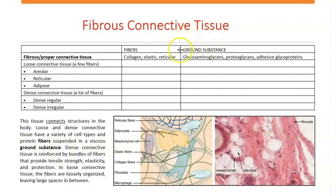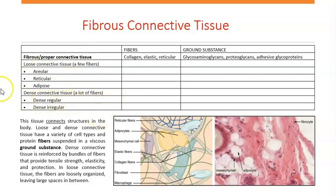What is the ground substance composed of? Glycosaminoglycans, proteoglycans, and adhesive glycoproteins. Now, based on the number of fibers — remember we said that connective tissue has fibers — you're going to have two main types. If you have just a few fibers in that tissue, that's going to be called loose connective tissue. If you have a lot of fibers, it's going to be called dense connective tissue.